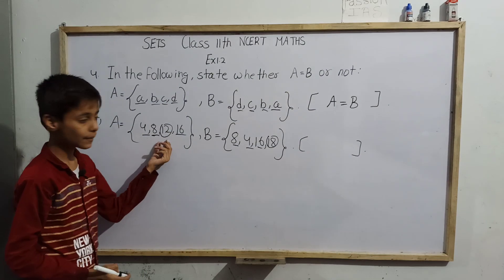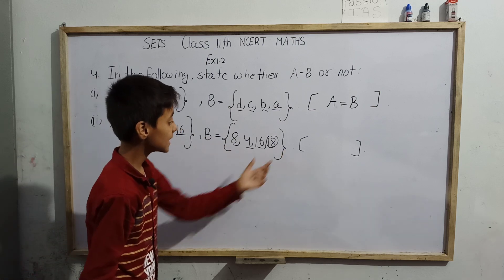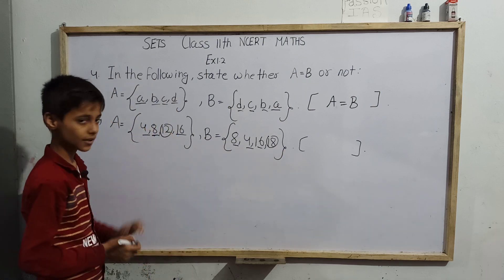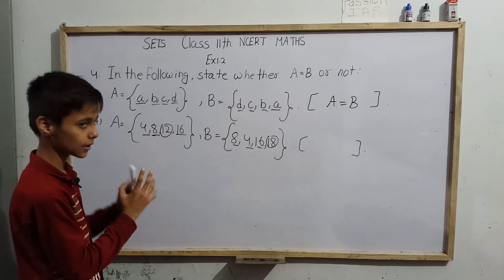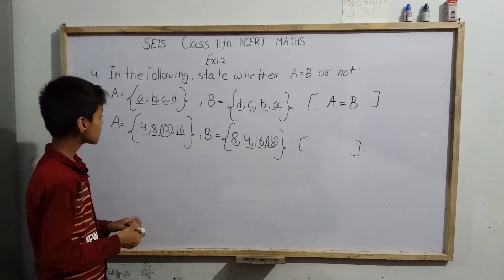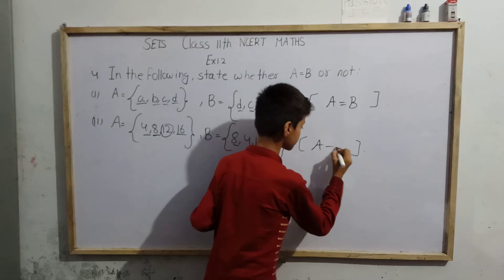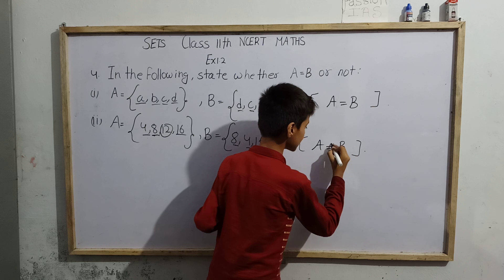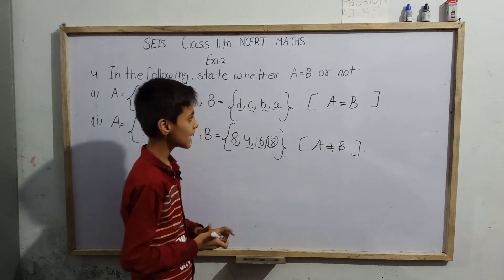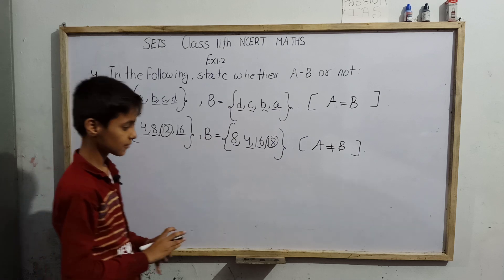So element 12 is present in set A but not in B, and element 18 is present in set B but not in A. So here we can see two different elements which are not present in opposite sets. So we can write that A is not equal to B. So the answer is: for first, A equals B, and for second, A is not equal to B.